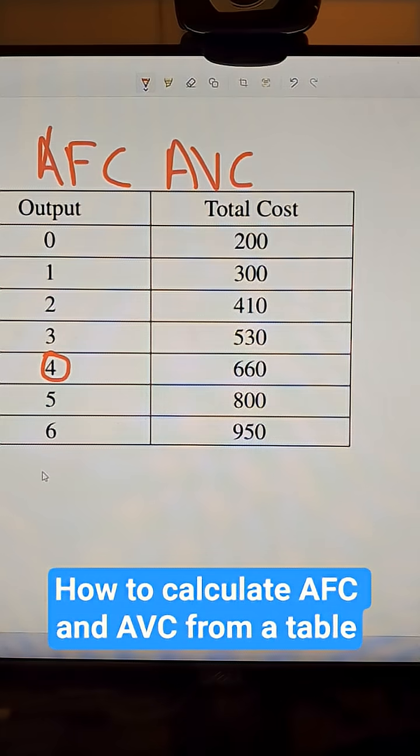First I want to recognize what the fixed costs are. The fixed costs in this cost function would be when I don't produce anything - what are my costs? My fixed costs are 200, and total cost equals my fixed cost plus whatever my variable cost is.